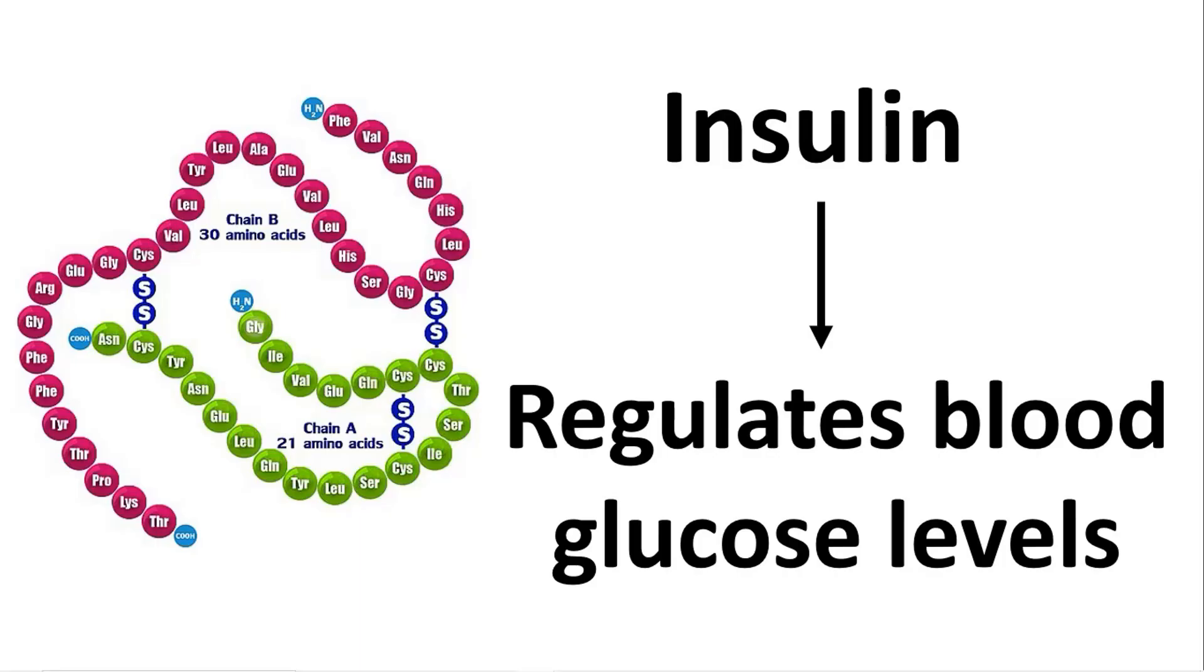Now the question comes: how is insulin protein synthesized? The answer to this question comes in form of the central process or central dogma of molecular biology. Let us dissect this central dogma first and then we will move to the definition of gene.